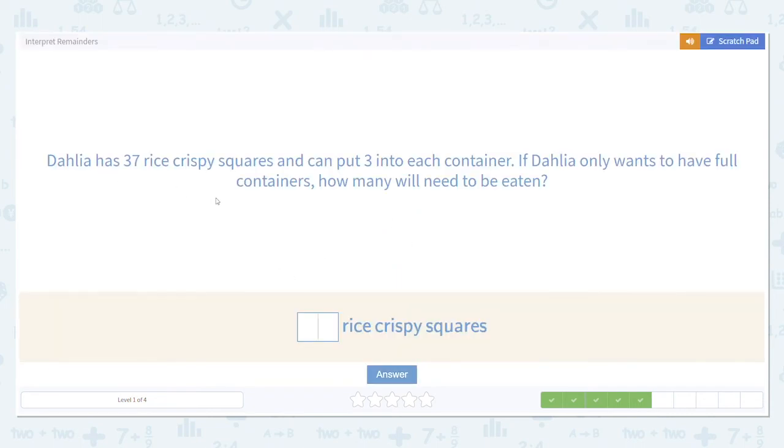Dahlia has 36 Rice Crispy squares and can put three into each container. If Dahlia only wants to have full containers, how many will need to be eaten? It's the same basic idea. 36 total divided by three.